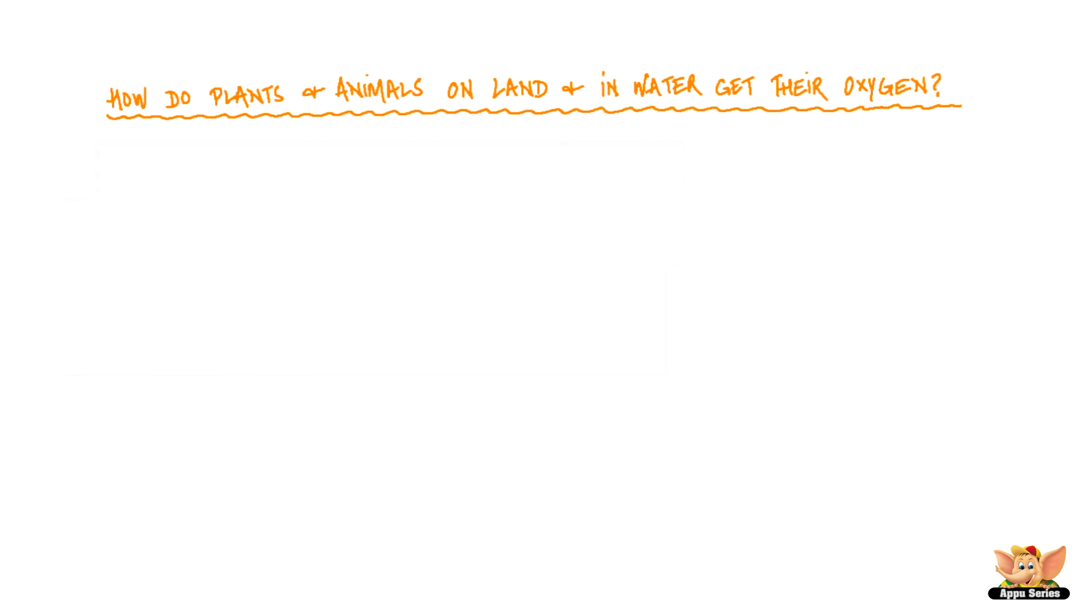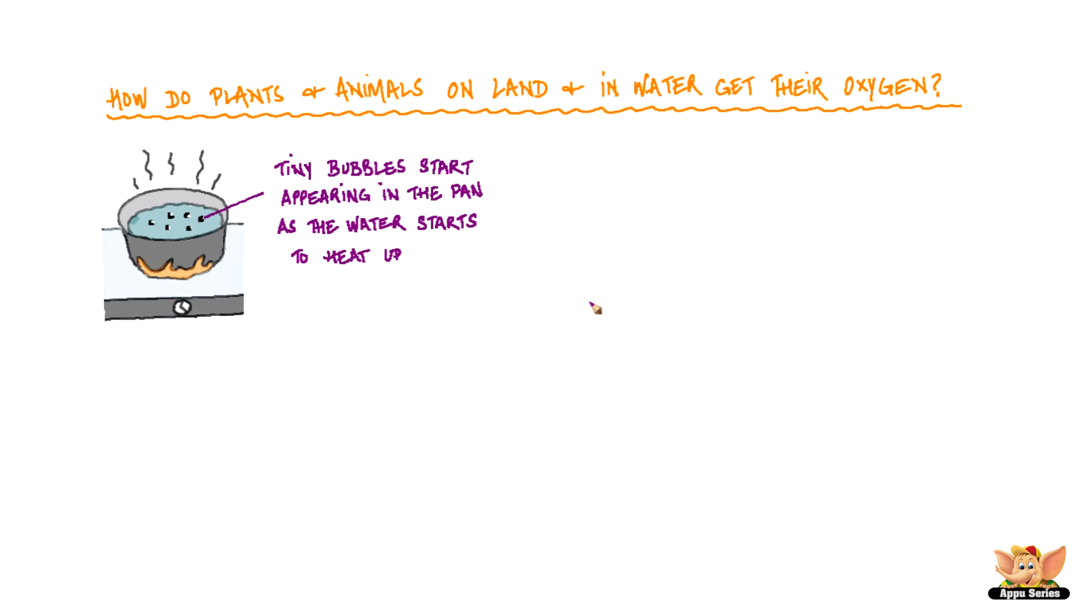How do plants and animals on land and in water get their oxygen? If you join your mother in the kitchen and observe when she boils some water while cooking, you will see that tiny bubbles start appearing in the pan as the water starts to heat up.